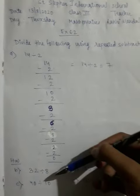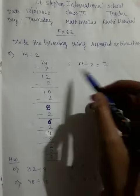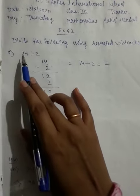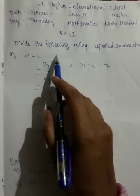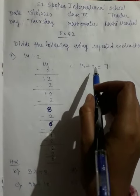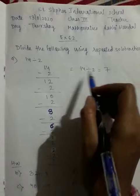This is the process of repeated subtraction. So if we divide this way, 14 divided by 2, what happens? 7.